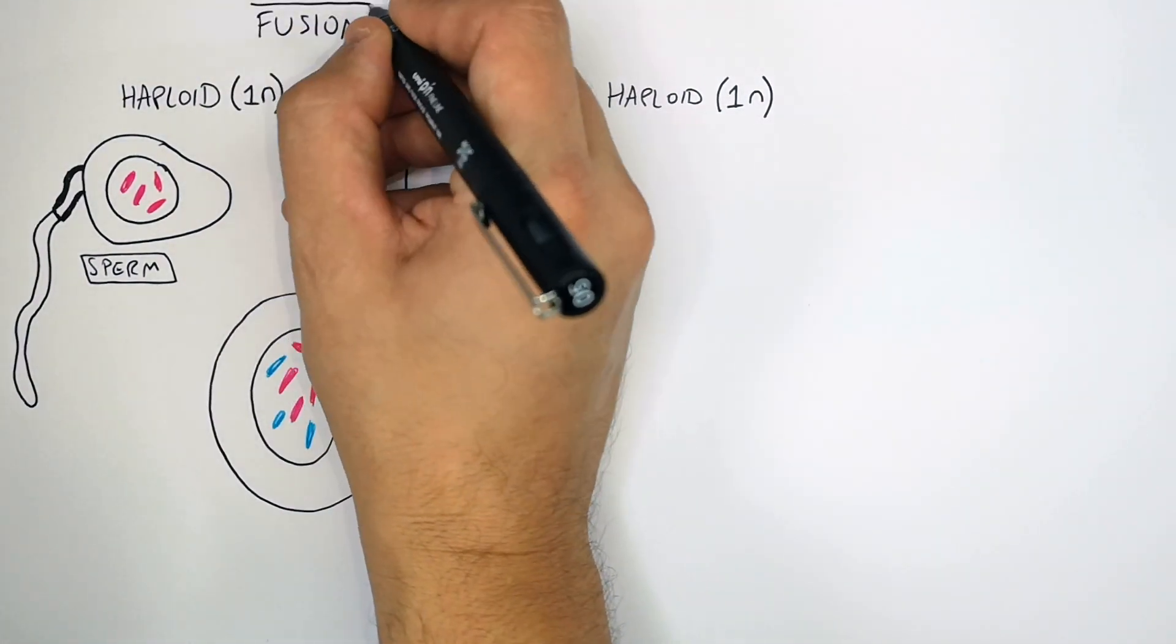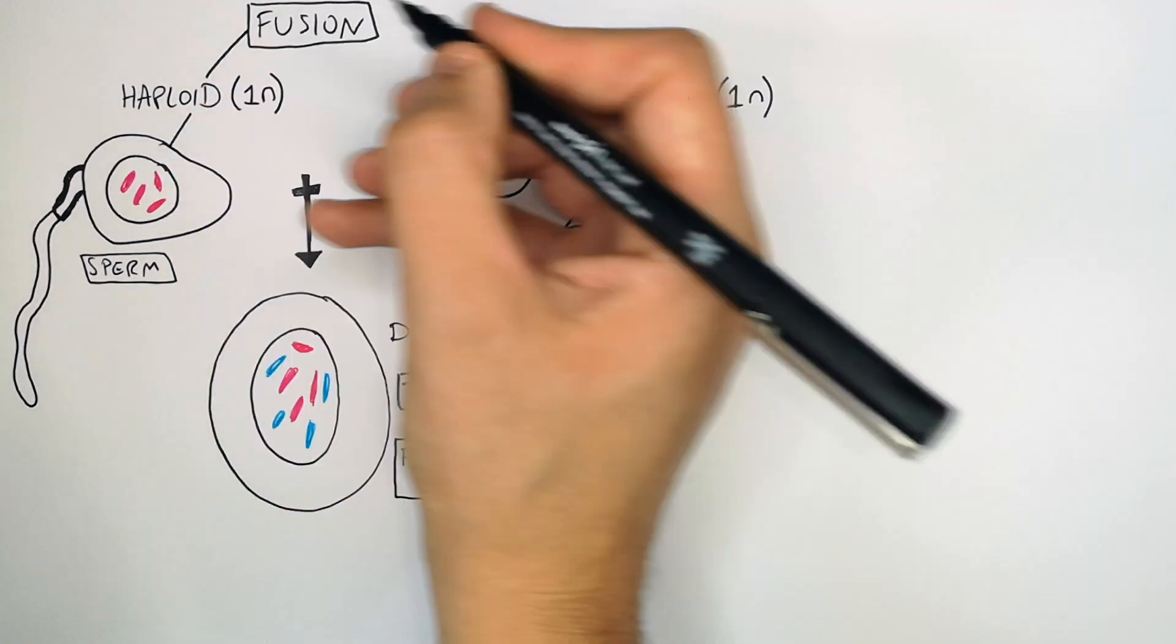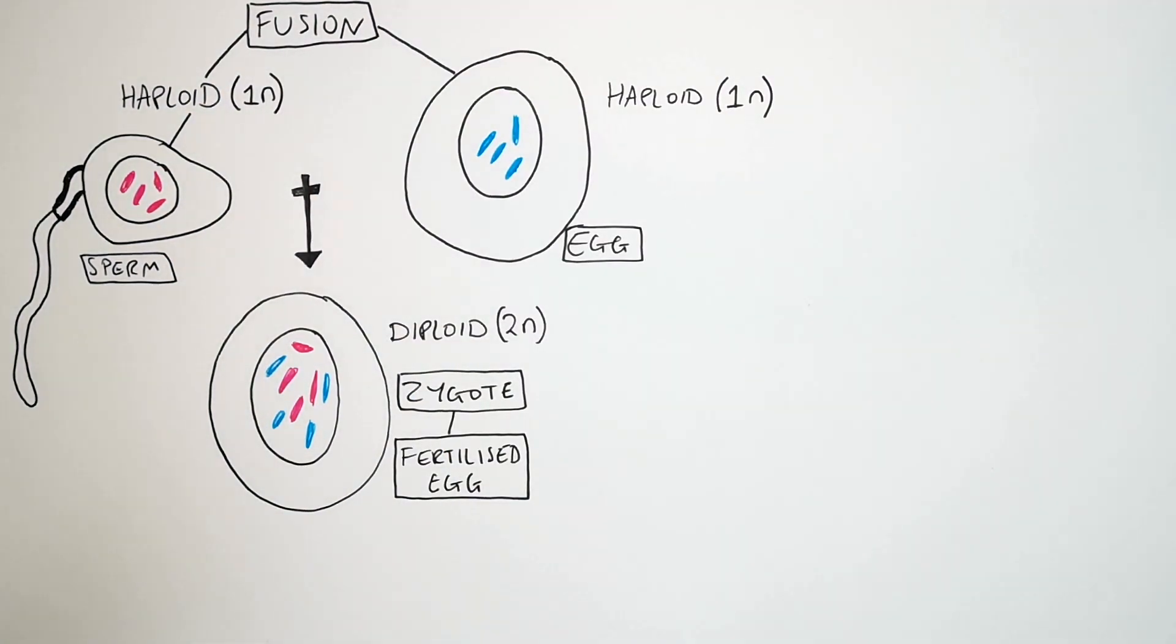It is the fusion of two haploid gametes, one sperm and one egg.